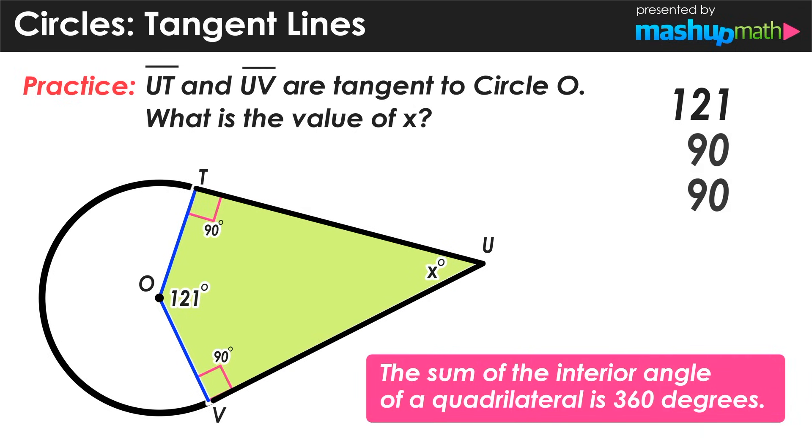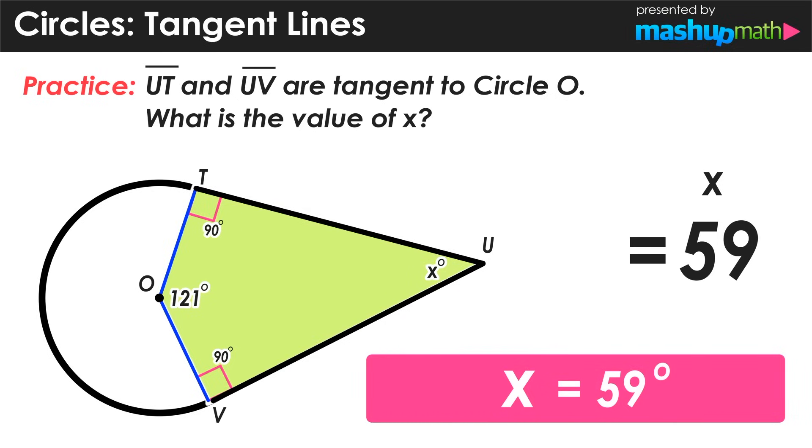121 plus 90 plus 90 plus whatever x is, is going to equal 360. And now we can just use some basic algebra to isolate the value of x and find out its value. In this case, adding the three angles that we do know gives a value of 301. Subtracting 301 from 360 results in 59, which is the value of x. And we can conclude that angle U is 59 degrees.